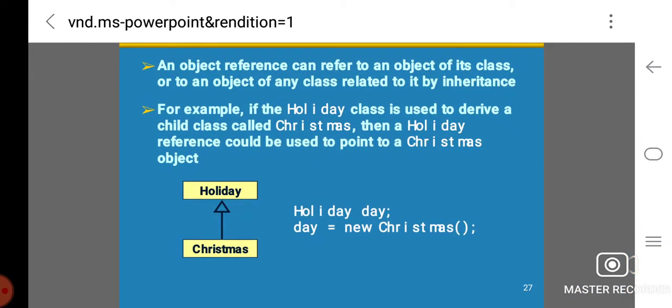An object reference can refer to an object of its class or to an object of any class related to it by inheritance. For example, if the Holiday class is used to derive the child class called Christmas, then a Holiday reference could be used to point to a Christmas object: Holiday day; day = new Christmas();